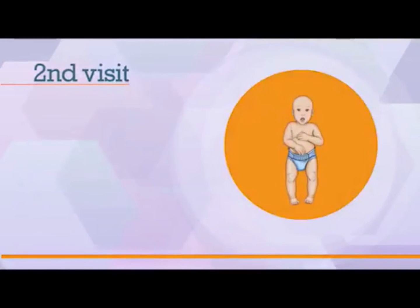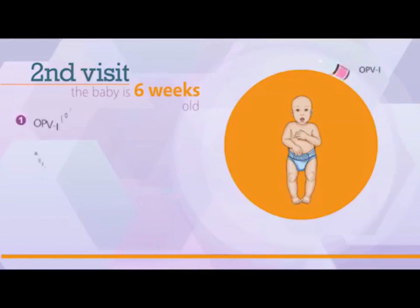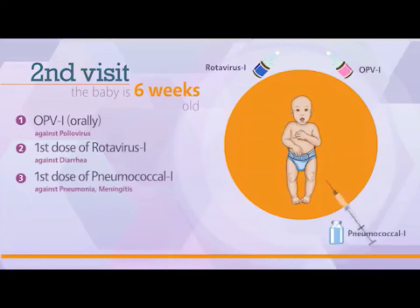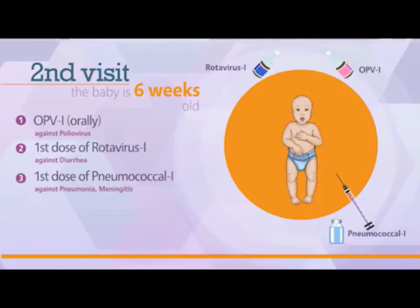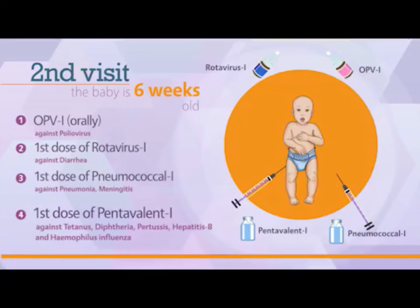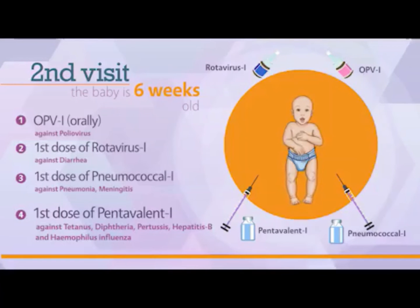The second visit is scheduled when the baby is six weeks old. On this visit, the baby will receive OPV1 vaccine orally, the first dose of rotavirus 1 vaccine orally for protection against diarrhea, the first dose of pneumococcal 1 vaccine intramuscularly in the left thigh for protection against pneumonia and meningitis, and the first dose of pentavalent 1 vaccine intramuscularly in the right thigh for protection against tetanus, diphtheria, pertussis, hepatitis B, and haemophilus influenza.